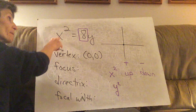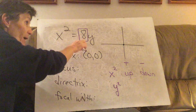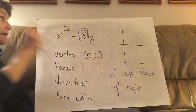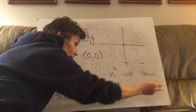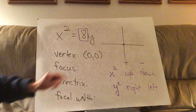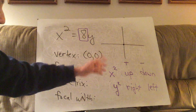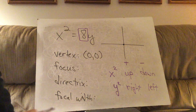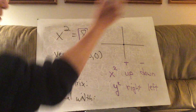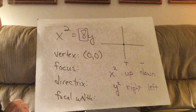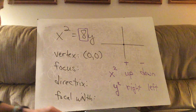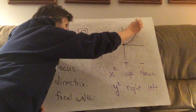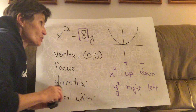For y² parabolas: a positive coefficient means it opens to the right, and a negative coefficient means it opens to the left. We'll get one of each through the notes. Remember: x² parabolas are functions — they open up and down. y² parabolas are not functions — they open sideways. For our current problem, it's x² with a positive coefficient, so it opens up, vertex at the origin.